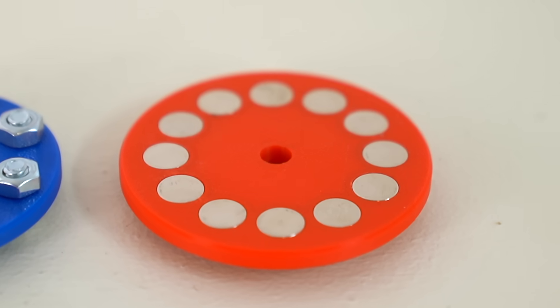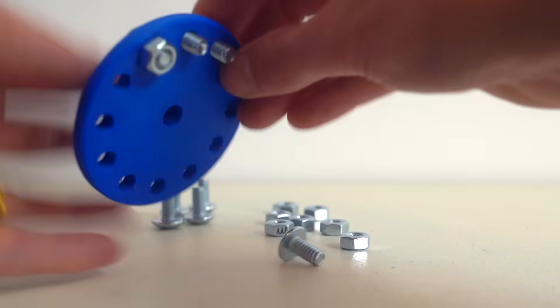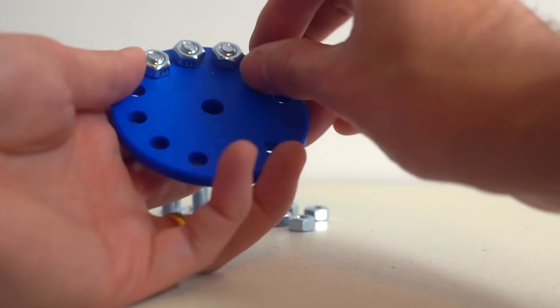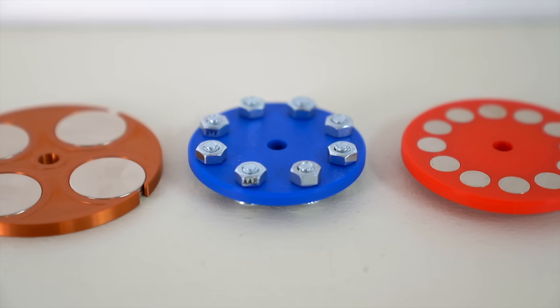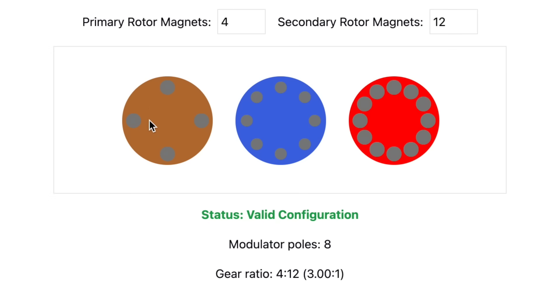But how do we know how many magnets to use for each stator, and how many nuts and bolts to use for the rotor? It's actually a really easy formula. All you do is you take the number of magnets for the primary rotor, in this case four, you add it to the number of magnets for the secondary rotor, and you divide it by two to get the number of modulator poles.